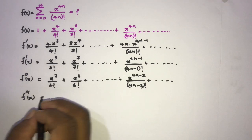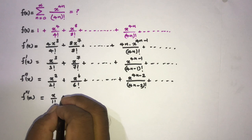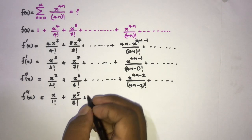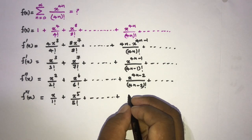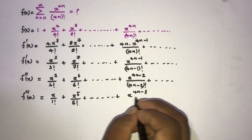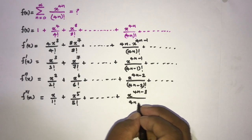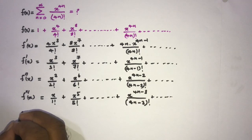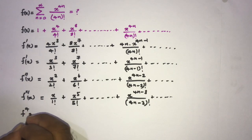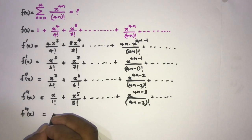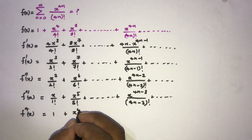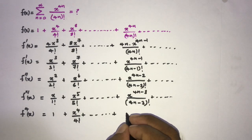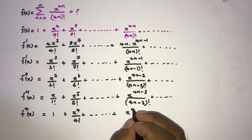Then the third derivative: f triple prime of x equals x over 1 factorial, plus x to the fifth over 5 factorial, plus x to the 4n minus 3 over 4n minus 3 factorial, plus so on. And now the fourth derivative: 1 plus x to the fourth power over 4 factorial, plus higher terms.